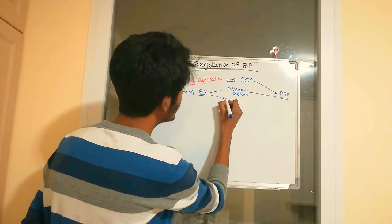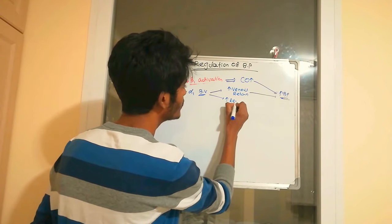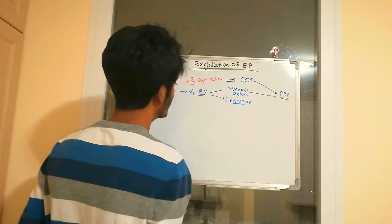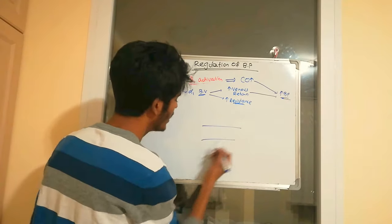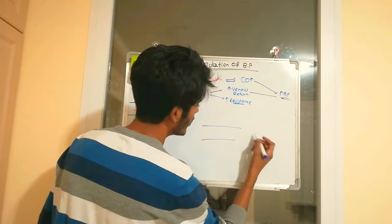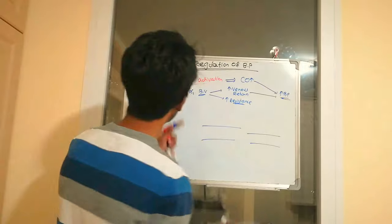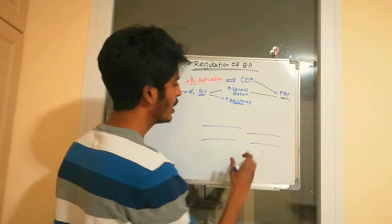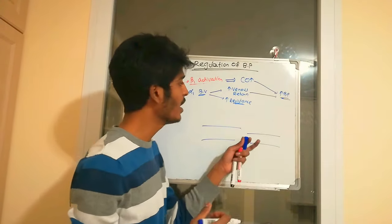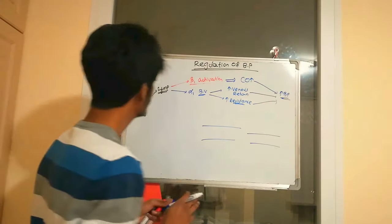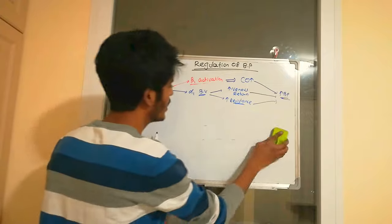Alpha-1 stimulation also increases vascular resistance. The normal blood vessel becomes narrowed when alpha-1 is stimulated — this vasoconstriction increases resistance, which in turn leads to elevation of blood pressure. This is one mechanism through stimulation of adrenoreceptors.